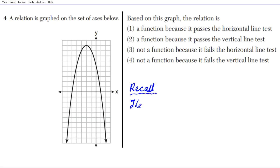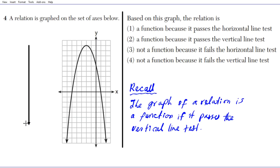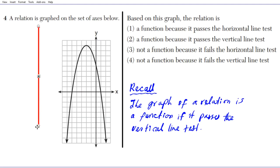The graph of a relation is a function if it passes the vertical line test, or VLT. The vertical line test says: if you draw a vertical line and it intersects the graph at exactly one point throughout the entire domain, then that graph is the graph of a function. To pass means no more than one intersection.